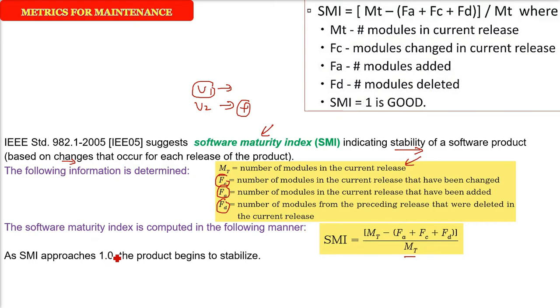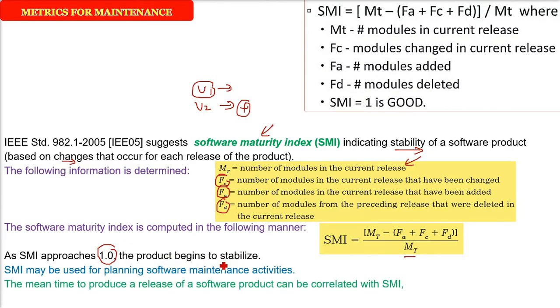As this SMI approaches 1.0, we can assume that the product is beginning to stabilize. SMI may be used for planning software maintenance activities. The mean time to produce a release of a software product can be correlated with SMI, and empirical models for maintenance effort can be developed.